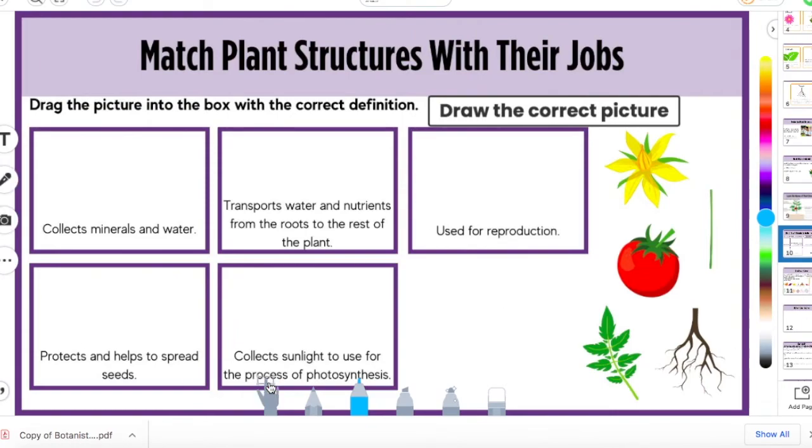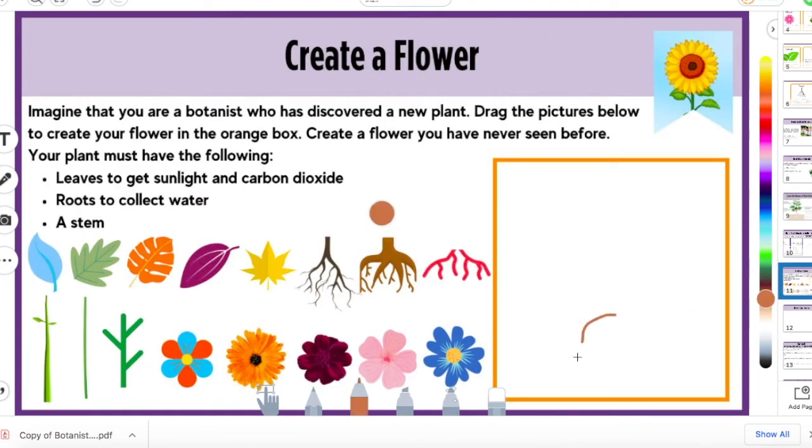So again, they can just use their little pencils. For example, so collects minerals and waters, it's going to be roots so they can draw their roots. Collect sunlight, it's going to be a leaf. You know, can see all that. And then same here, they can draw their roots, their stem, their leaves and all of that.